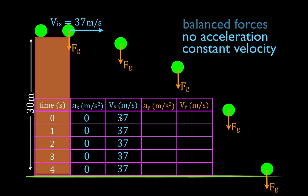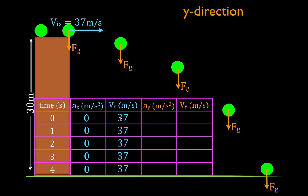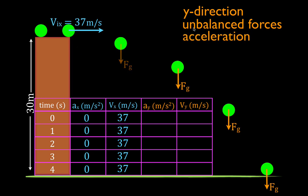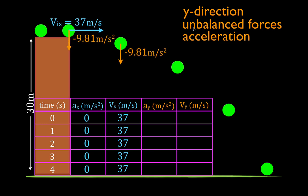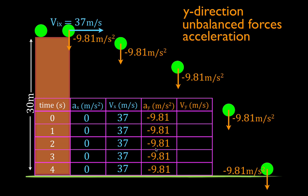That is the motion in the x direction. Now let's look at the motion in the y direction. In the y direction, the forces are unbalanced. There is one force and only one force — the force of gravity — acting in the negative y direction. There's no force to balance it out, so the forces are unbalanced. If the forces are unbalanced, then the object must be accelerating. The acceleration of the object — this is really free fall. Two-dimensional projectile motion in the y direction is free fall, and the acceleration is minus 9.81 meters per second squared. The force is constant, therefore the acceleration is constant, at minus 9.81 meters per second squared at each point in time.